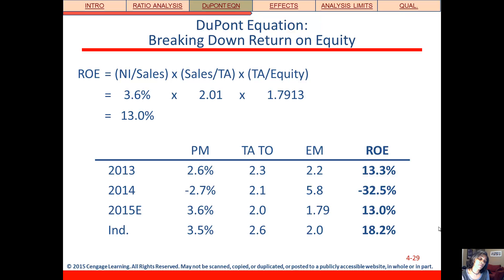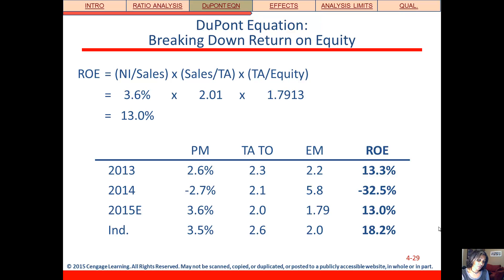Total asset turnover was a little bit low because of what was going on with accounts receivable and inventory, so it's trending downward and below the industry. Equity multiplier had gone up and now has gone back down because they paid off a lot of debt. Looking at 2013 to 2014, ROE went down significantly, and so did profitability, and debt went up.